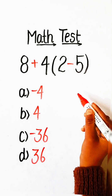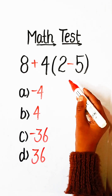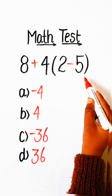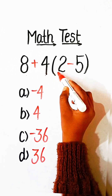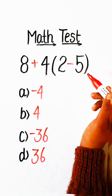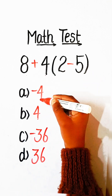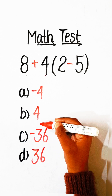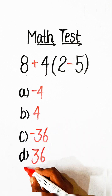Hello everyone, welcome back to my YouTube channel. In this video we will solve this math equation: 8 plus 4 under bracket, 2 minus 5, equals to what? Option A: minus 4, Option B: 4, Option C: 36, Option D: minus 36.